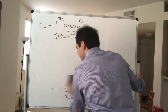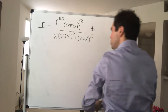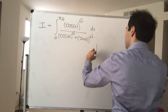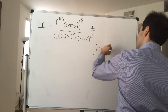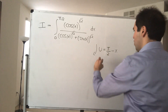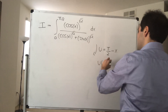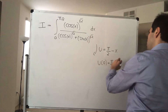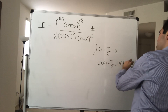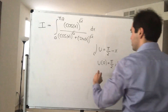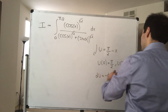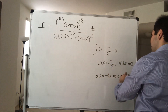Here's a nice trick: let's use the substitution u equals π/2 minus x. Then u of 0 is π/2, u of π/2 is π/2 minus π/2, which is 0, and du is minus dx, so dx is minus du.